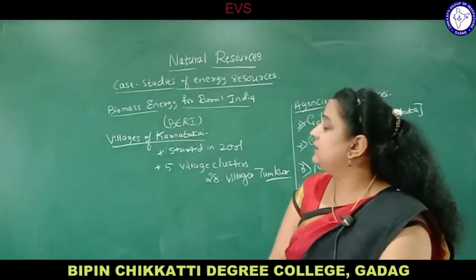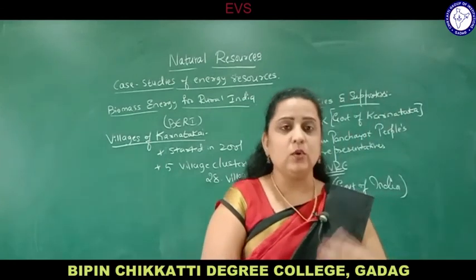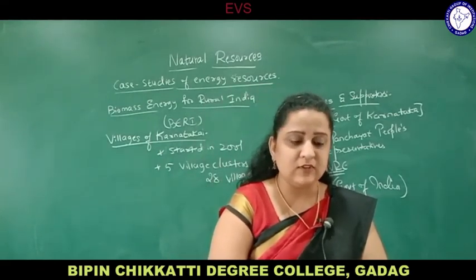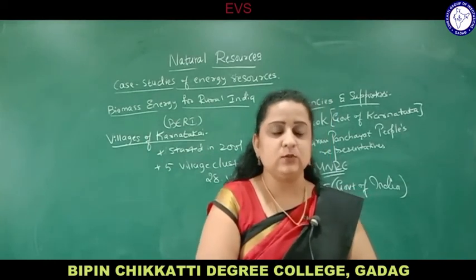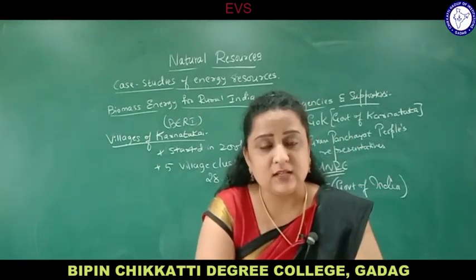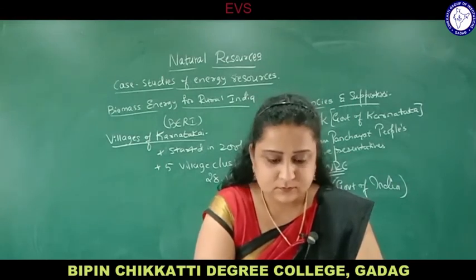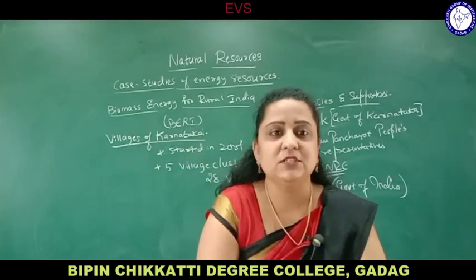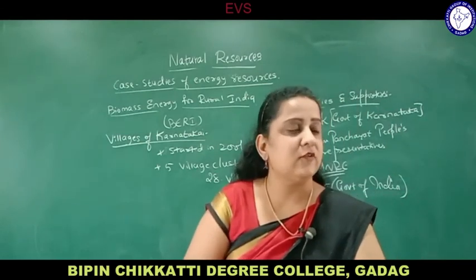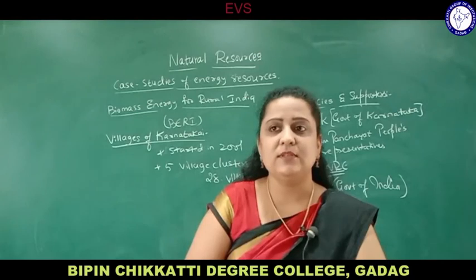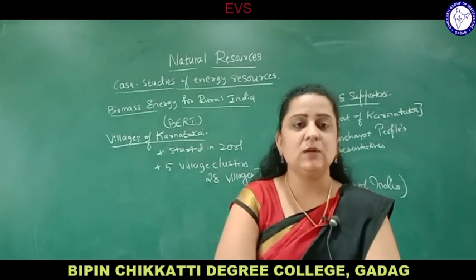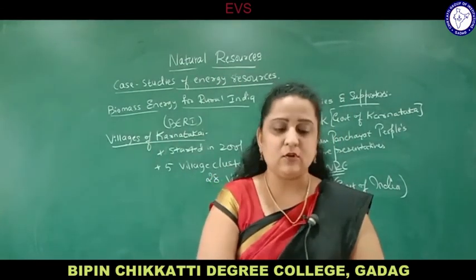Finally, today we started with energy resources — under which we saw growing energy needs, how industrialization and urbanization increase our energy needs. We also saw alternative energy sources: solar energy, wind energy, wave and tidal energy, geothermal energy, hydrothermal energy, atomic energy, biomass, biogas, etc. Last, case studies of energy resources — BERI, biomass energy for rural India, in Tumkur district, Karnataka — about 28 villages in this program for saving energy resources. Here completes the chapter on Natural Resources. In the next session we will start with another chapter called Biodiversity. Thank you.